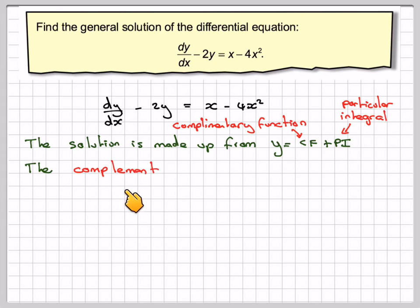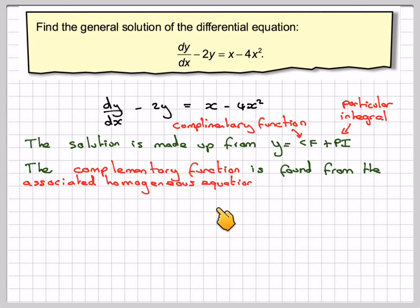The complementary solution, or the complementary function, is found from the associated homogeneous equation. Take this bit and put it equal to zero. So dy/dx minus 2y is equal to zero.